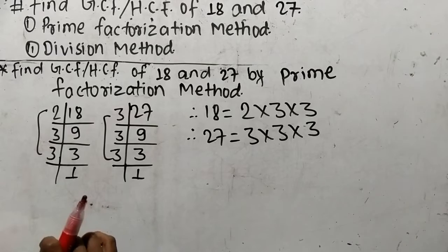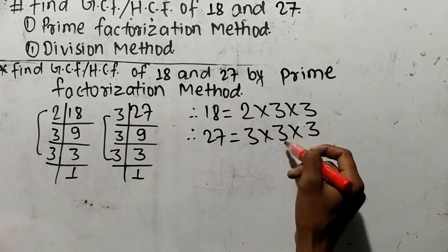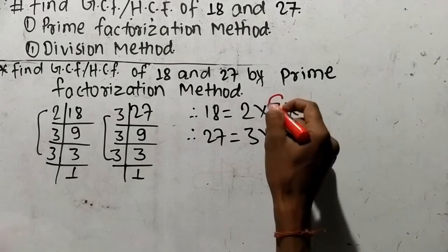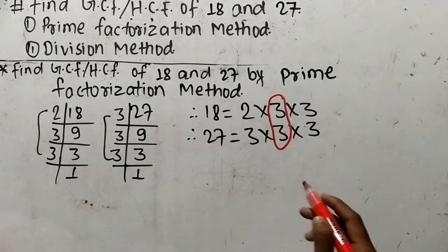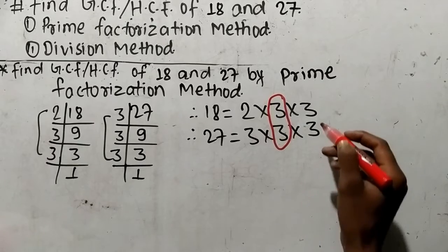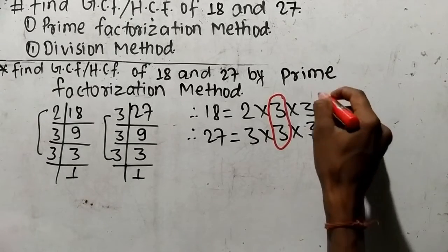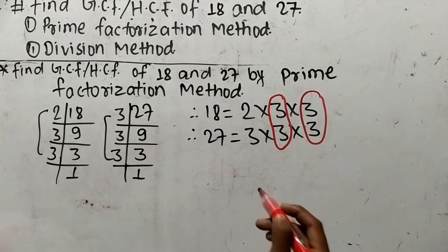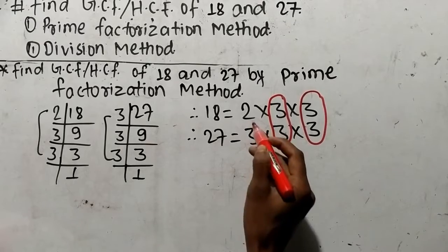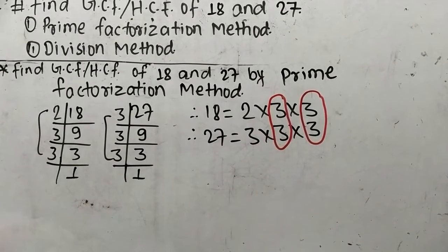Here 18 has a factor of 3 and 27 also has a 3, so 3 is our first common factor. Similarly, 18 has another 3 and 27 also has another 3, so 3 is again a common factor. The remaining 2 from 18 and 3 from 27 are not common factors.